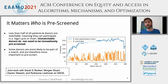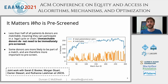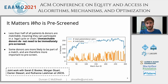Second, some donors are more matchable than others. We want to prioritize more matchable donors during pre-screening to guide our matching policy to a better outcome. These are two empirical reasons for why we care a lot about pre-screening.